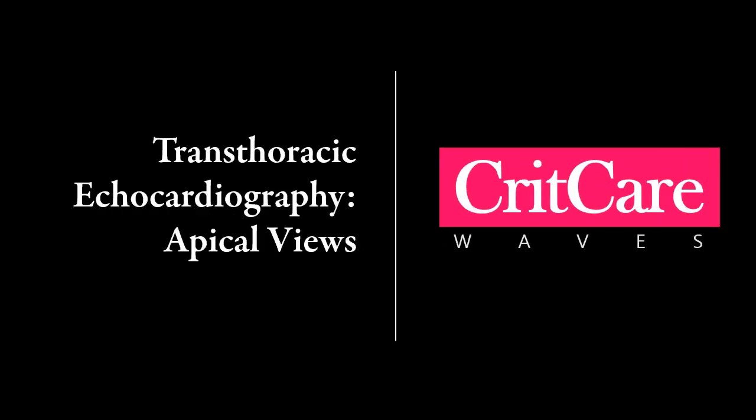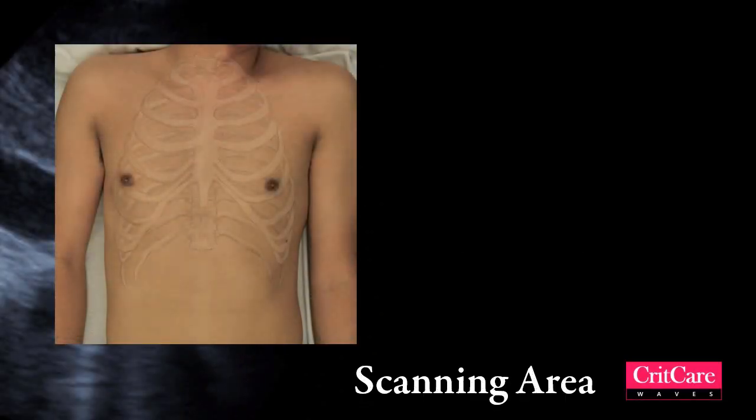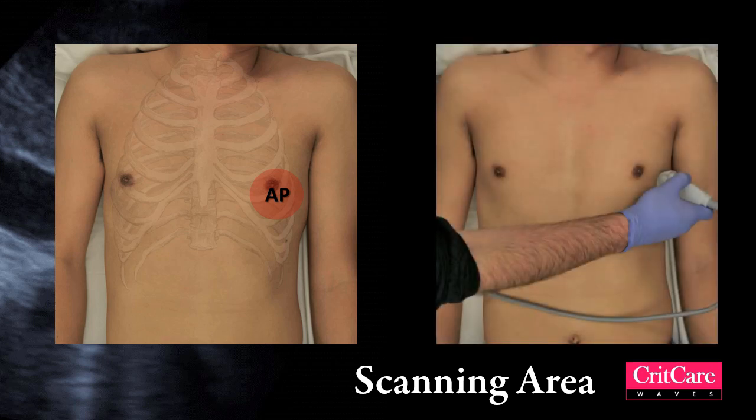Welcome to this video on apical views. The apical area is located between the midclavicular line and the left lateral chest wall as shown. You may also palpate the point of maximum impulse on the chest wall and place a probe in that area.